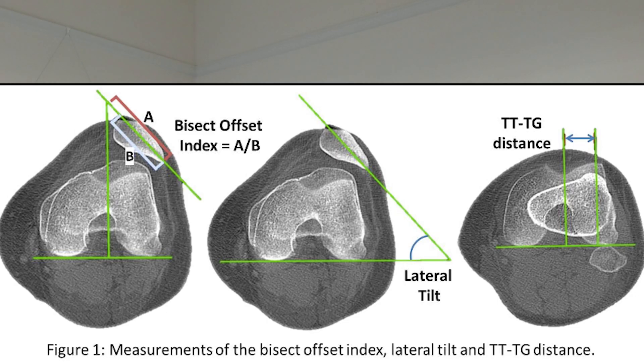We know that younger patients are at higher risk of having continued recurrent dislocations, but over time as they mature skeletally this can be reduced. Some unlucky patients do have a very shallow groove or a laterally perched patella that increases their risk of dislocation and may require correction of the anatomy.